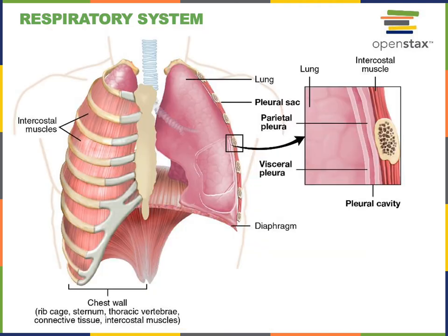The muscles that stimulate inspiration, or the breathing in of air, are known as the primary muscles of inspiration. The primary muscles of inspiration are the diaphragm and the external intercostal muscles. When these muscles contract, it causes the volume of the thoracic cavity to increase, and this increased volume causes the pressure of the air inside the lungs to decrease — which drives the movement of air into the lungs.